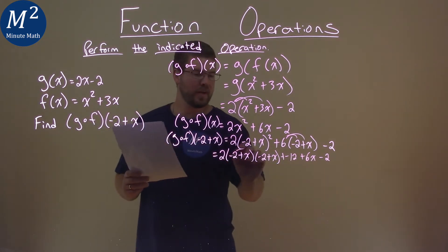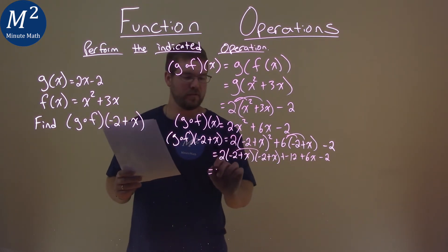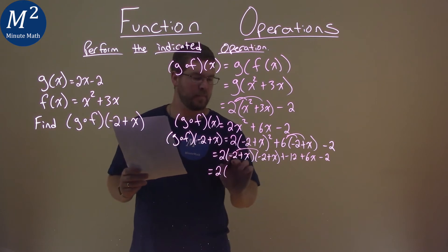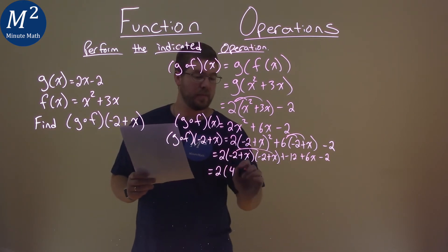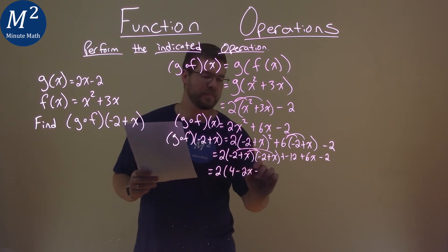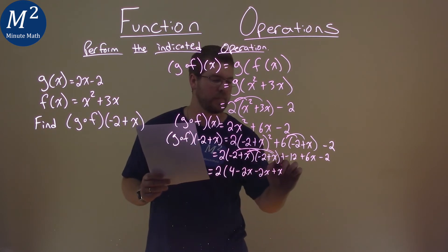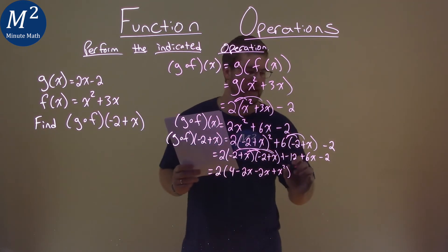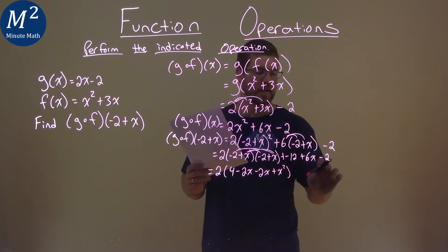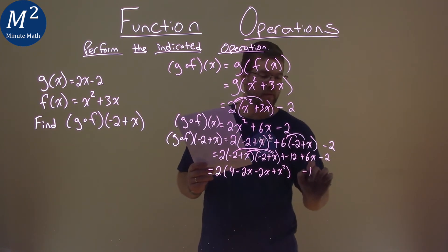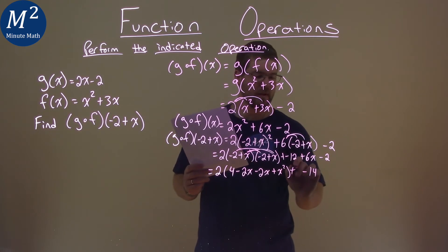So let's go multiply this part out. We FOIL it. So we have 2 here, times: negative 2 times negative 2 is a positive 4. Negative 2 times x is a minus 2x. x times negative 2 is, again, negative 2x. And x times x is x squared. Then we have a minus 12 and a minus 2, which come together to be a minus 14. And don't forget the plus 6x here. I'll rearrange that here.